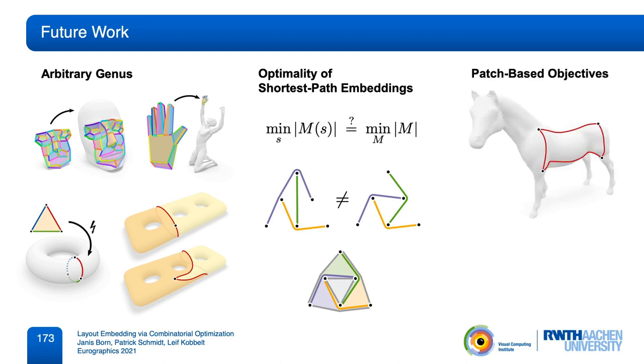Finally, our objective only considers paths and their length. For certain applications, it might be more natural to optimize for patch-based measures, such as mapping distortion. While implementing those measures in our framework is easy, we would need to come up with new ways of computing lower bounds, which is much trickier in this patch-based setting.